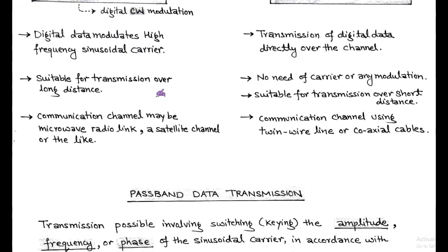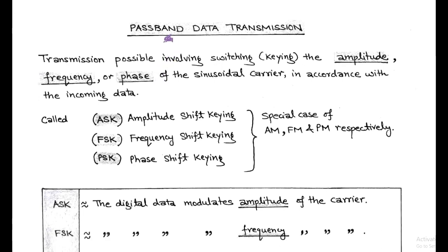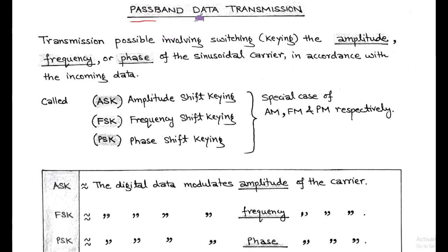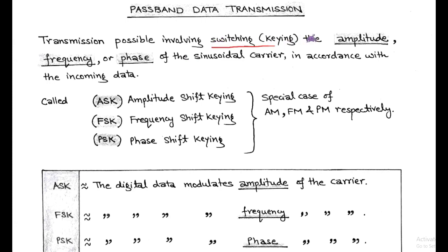Now we discuss Passband Data Transmission in detail. Passband Data Transmission is also called Digital Continuous Wave Modulation Technique because digital data is transmitted using a high-frequency sinusoidal carrier signal. The characteristics of the high-frequency sinusoidal carrier — such as Amplitude, Frequency, or Phase — are switched or keyed according to the incoming binary data. The techniques are Amplitude Shift Keying (ASK), Frequency Shift Keying (FSK), and Phase Shift Keying (PSK).